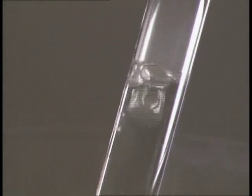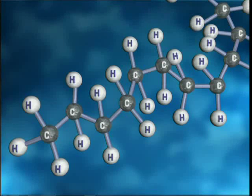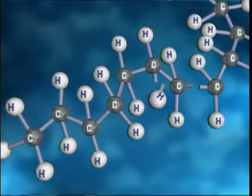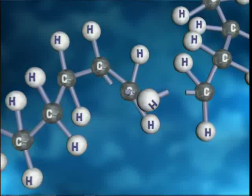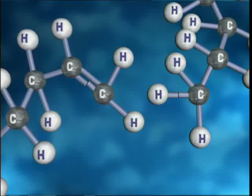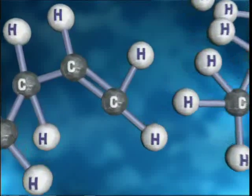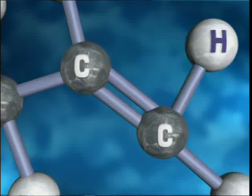Each paraffin molecule has now been cracked, or broken down, into two shorter chains. One of them contains a carbon-carbon double bond. This type of molecule is called an alkene.